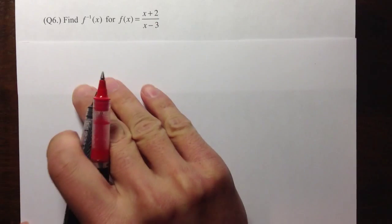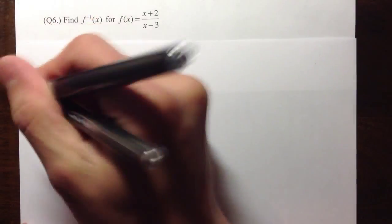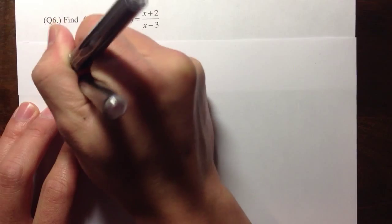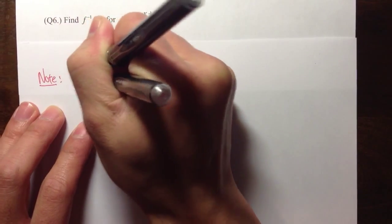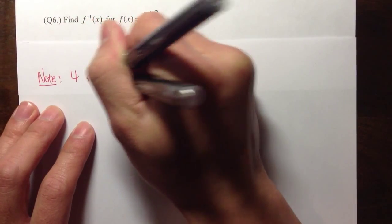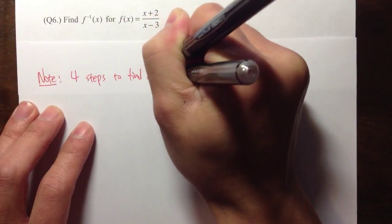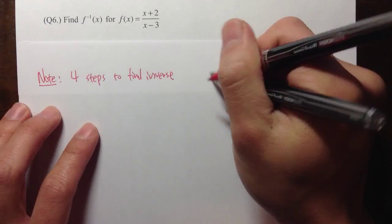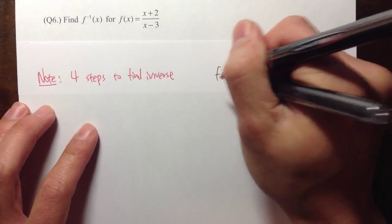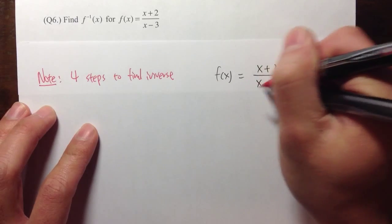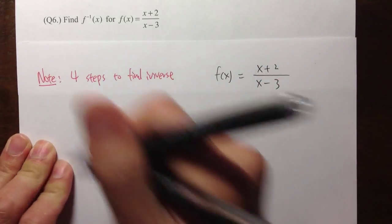Right here, we are going to talk about the four steps to find the inverse. So again, let me just draw some notes for you guys. I will call this the four steps to find inverse. We are talking about the function f of x is equal to x plus 2 over x minus 3.